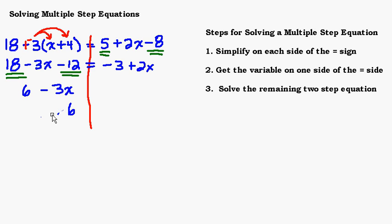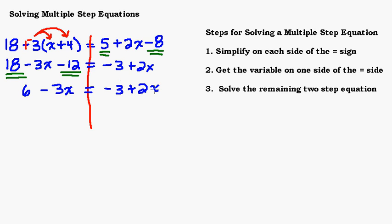Similarly on the other side, I could have written the 2x term first and then minus 3. Either way is fine. Bringing down the equal sign, on the right hand side I have negative 3 plus 2x. I can't simplify that any further because those terms are not like terms. So I'm done with step one.